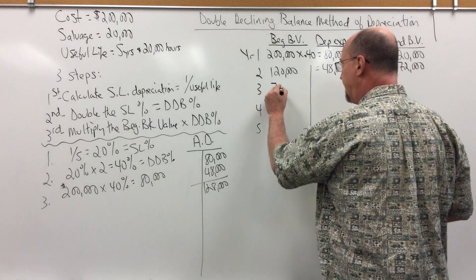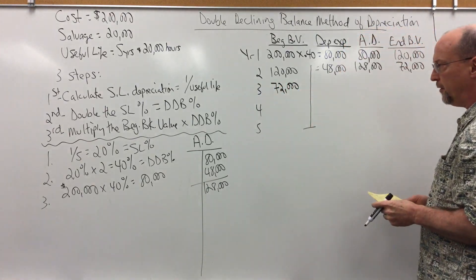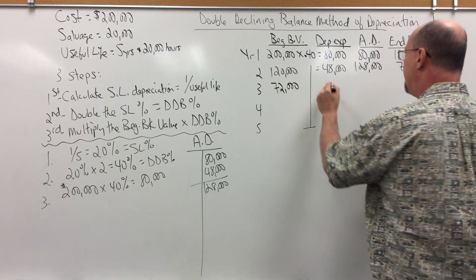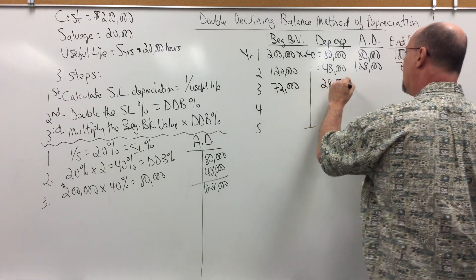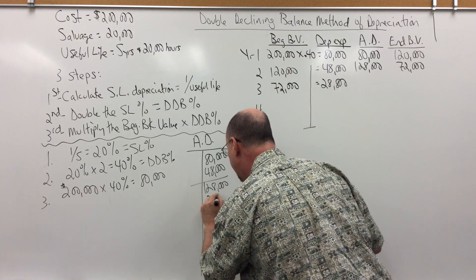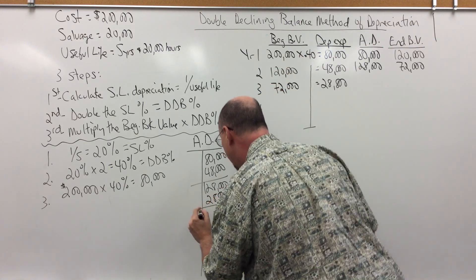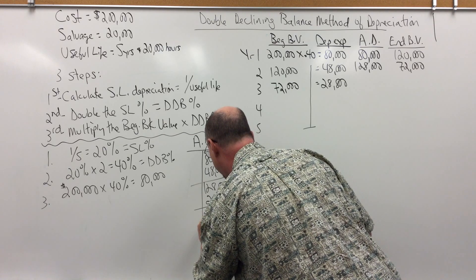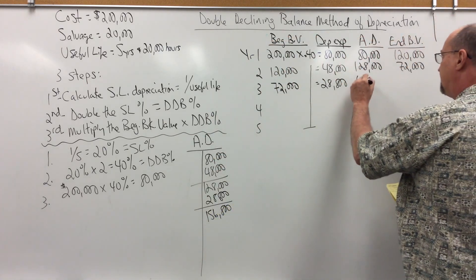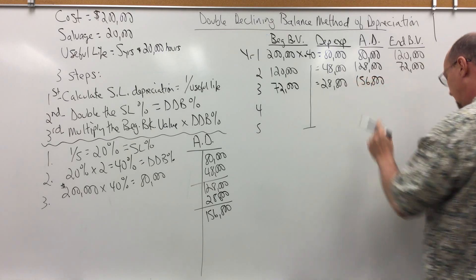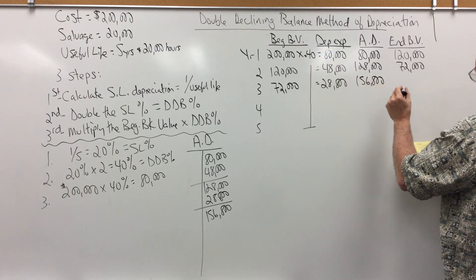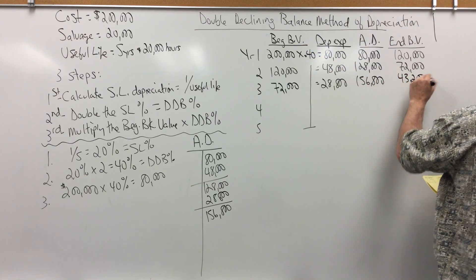That becomes my year 3 beginning book value. I'm going to multiply that times 0.4, and that's going to give me 28,800 of depreciation expense in year 3. So, I'm going to add 28,800, and I'm going to get 156,800. And then my ending book value will be cost of 200 minus 156, which is 43,200.